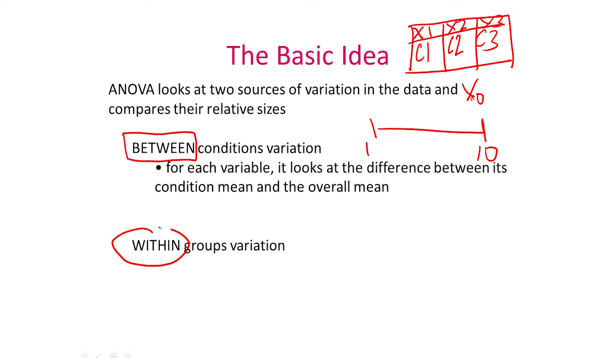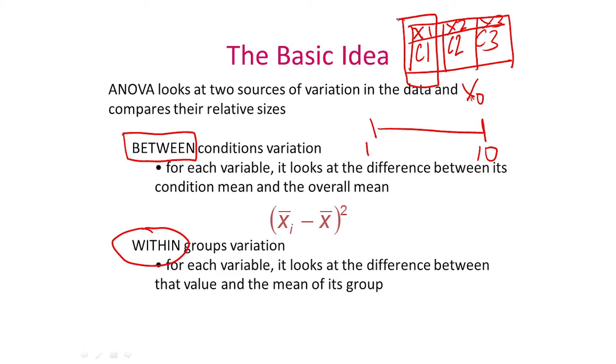Then there is something called a within group variation. For a within group variation, ANOVA is going to look at each condition, let's say C1. It's going to look at every single X within C1. X is the variable or the answer that is reported by every participant. And it's going to look at the difference between that X and its mean which is X1. So, for example, let's try and be a bit more formal with this. Xi, in this case, represents X1, X2 or X3. And this represents the overall X. So, the between condition variation is the difference between each of X1 and X0 and X2 and X0 and X3 and X0 squared. Whereas the within group variation refers to the difference between the X under each condition minus the average of that particular condition squared.